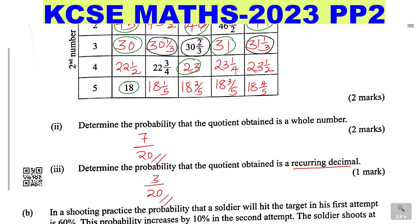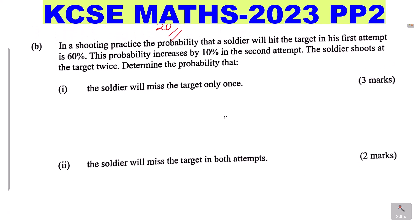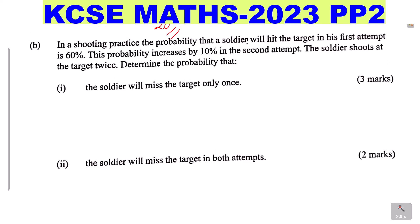We go to Part B of the question. In a shooting practice, the probability that a soldier will hit the target in his first attempt is 60%. This probability increases by 10% in the second attempt. The soldier shoots at the target twice. Determine the probability that: one, the soldier will miss the target only once; and two, the soldier will miss the target in both attempts.